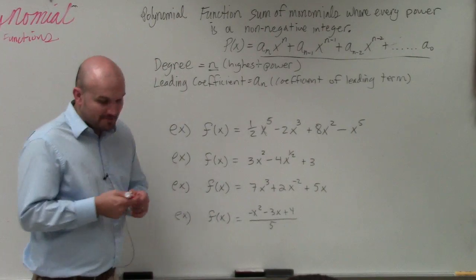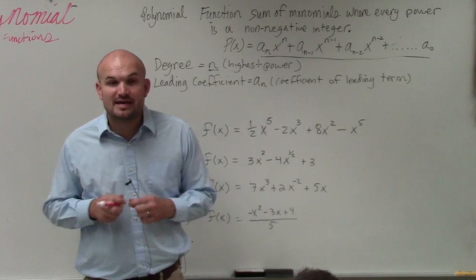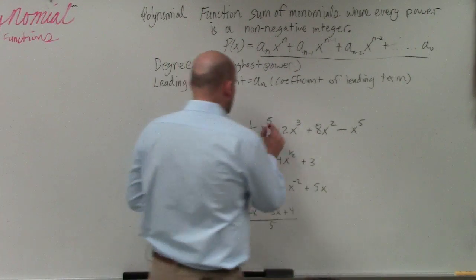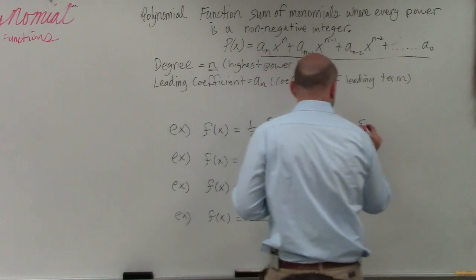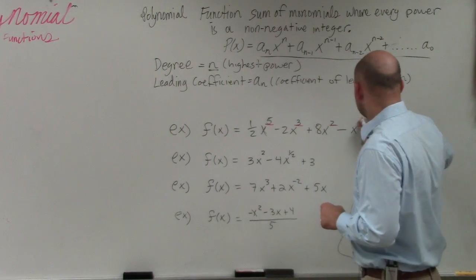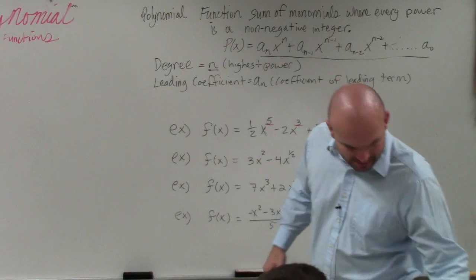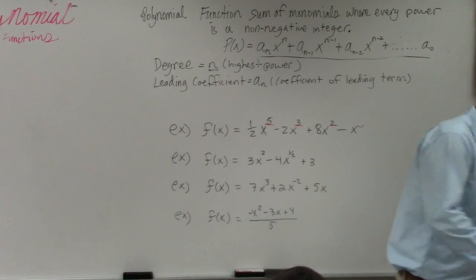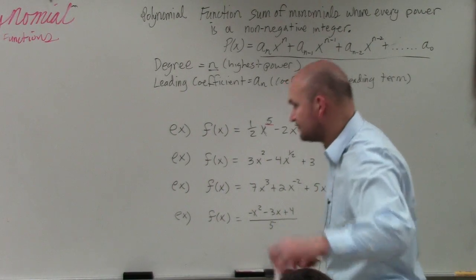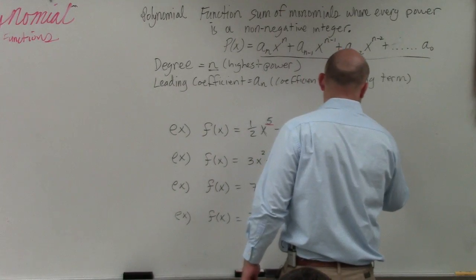So in this first example, basically, as I mentioned, to determine if something is a polynomial or not, we need to look at our powers. Ah, that's not supposed to be that. It's supposed to be a 6. I didn't write that correctly. My apologies. And then I threw my thing right here.